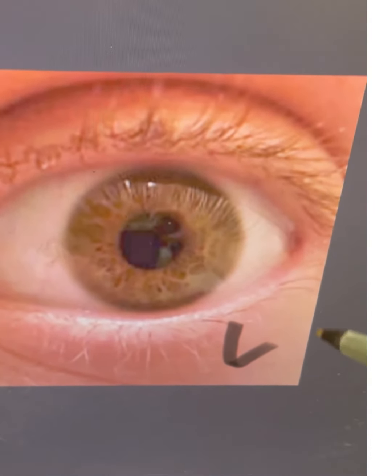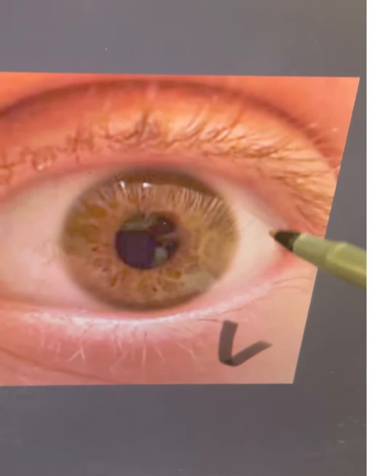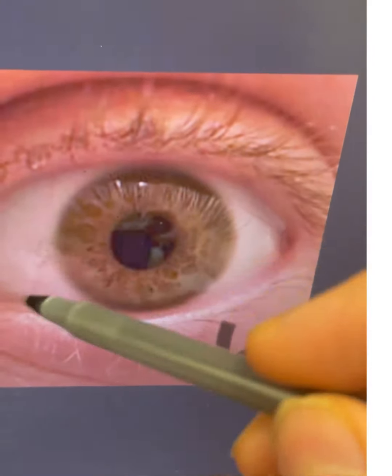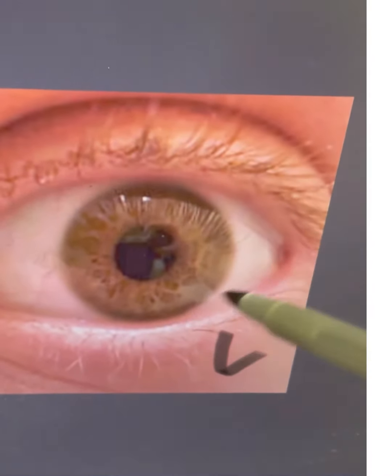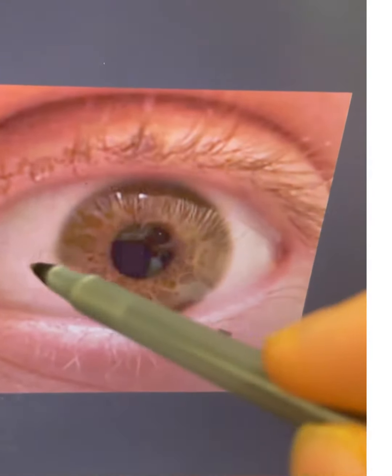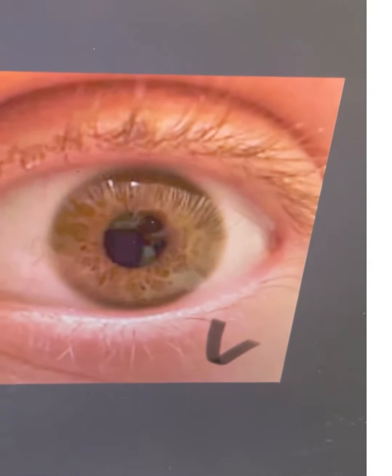You can see the blood vessels on the right — the sclera shows high acidosis and high inflammation. You need to neutralize this by going on a fruit diet and using the herbs.